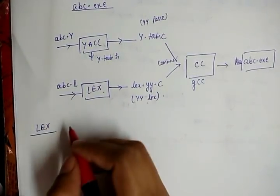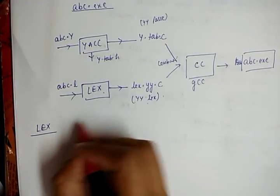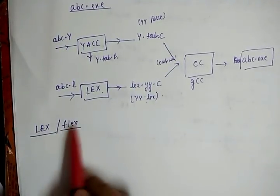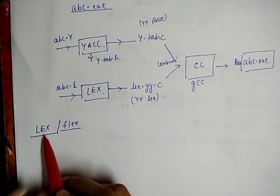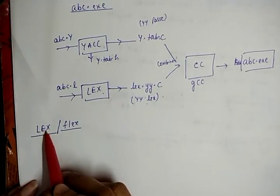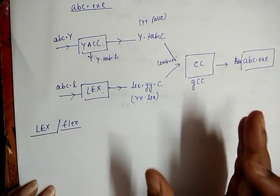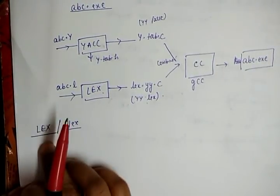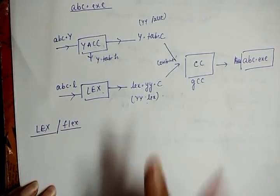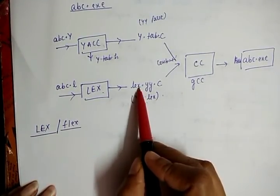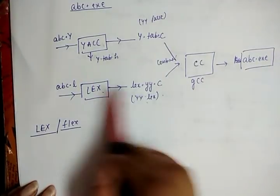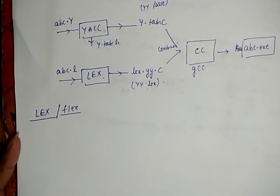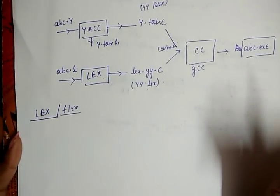There is one open-source implementation of the original Unix Lex utility called Flex. Lex is a scanner generator: the input is a set of regular expressions with associated actions written in C code, and the output is a table-driven scanner in the form of lex.yy.c.